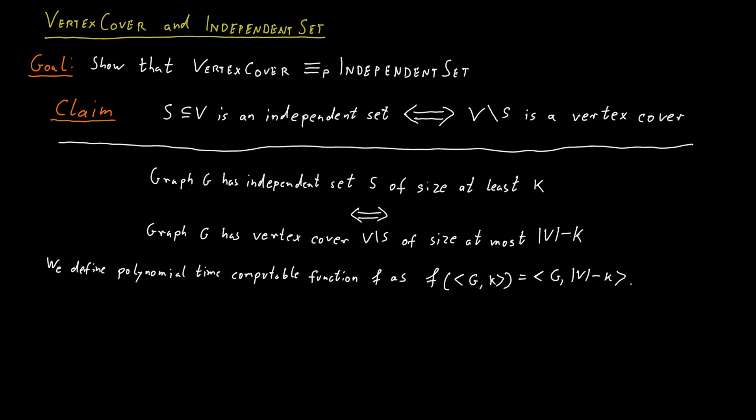Because of the above relationship, we have that (G, K) is in IndependentSet if and only if F(G, K) equals (G, |V| minus K) is in VertexCover.